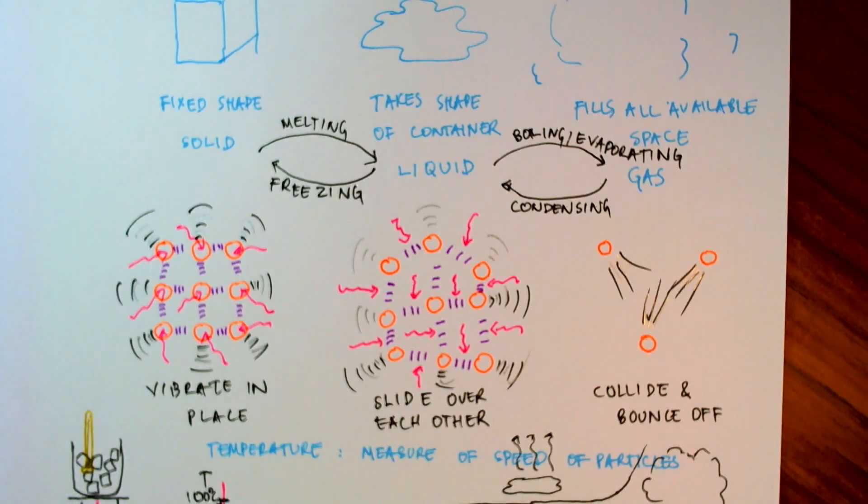So in this video, we've looked at how we could use the atomic theory of Democritus to try to explain the changes in states of matter, the changes between solids, liquids, and gases, in terms of the forces between the particles and the speeds of the particles. And we also looked at an experiment to look at the temperature change when the states of matter start changing from one to another. In the next video, we'll look at a more sophisticated view of the atom.